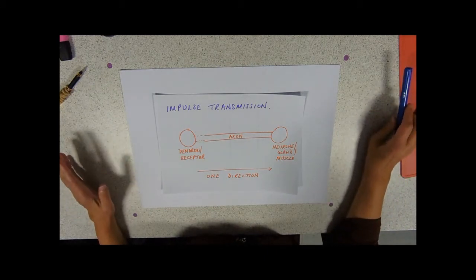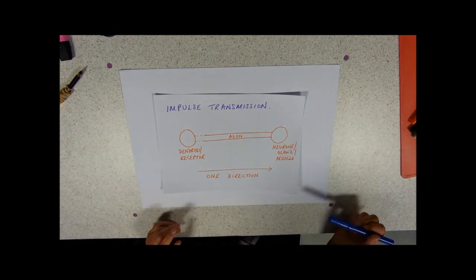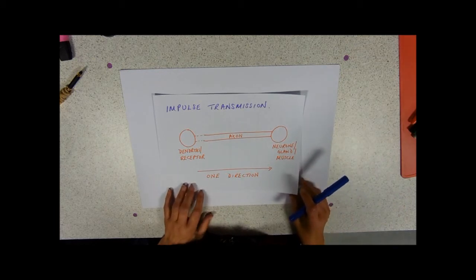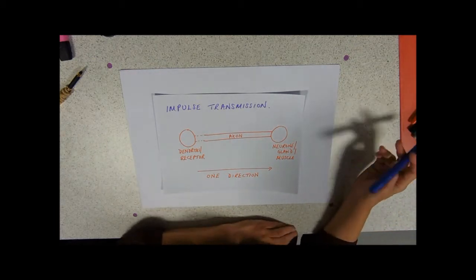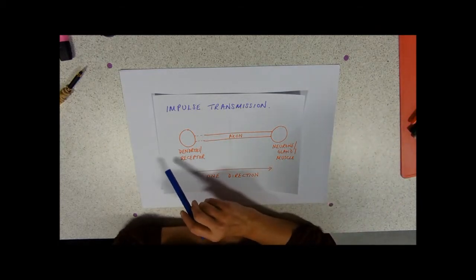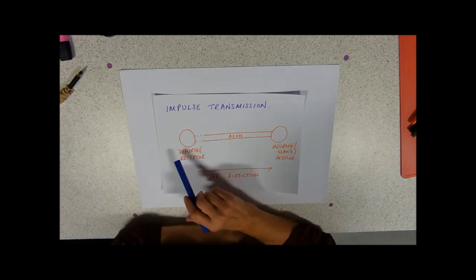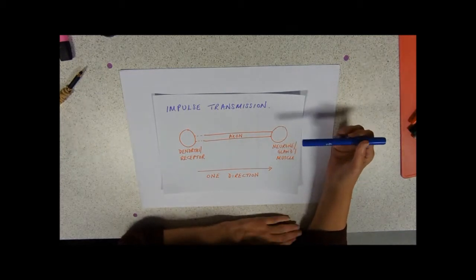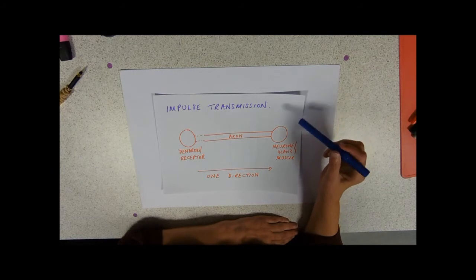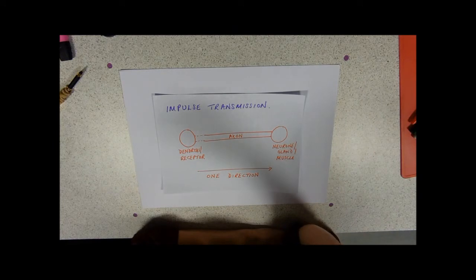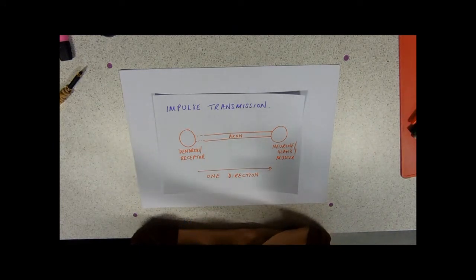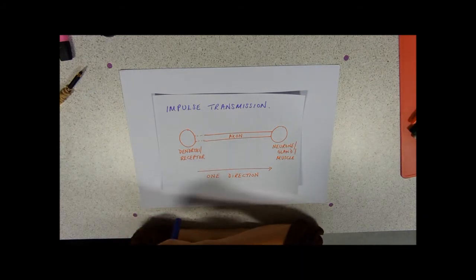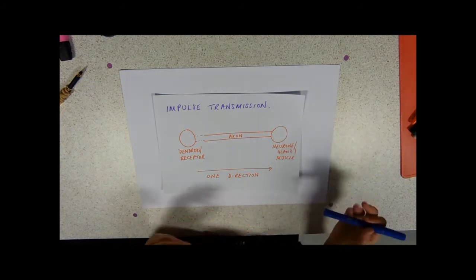A couple of key things about this. First of all, the impulse is going to go in one direction. In a living organism, the direction is determined by where the receptor is, and it's always going off into the central nervous system for processing, then going back out to another neuron, a gland, or a muscle. So one thing that keeps it going in one direction is that impulses always travel from a receptor into the central nervous system, which sends an impulse out to an effector — a gland or muscle — to do something about it.